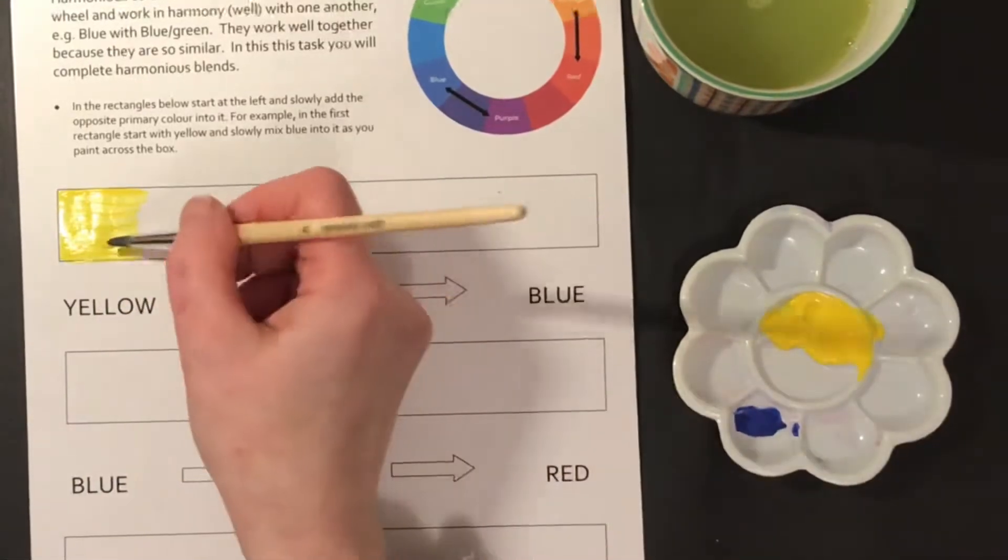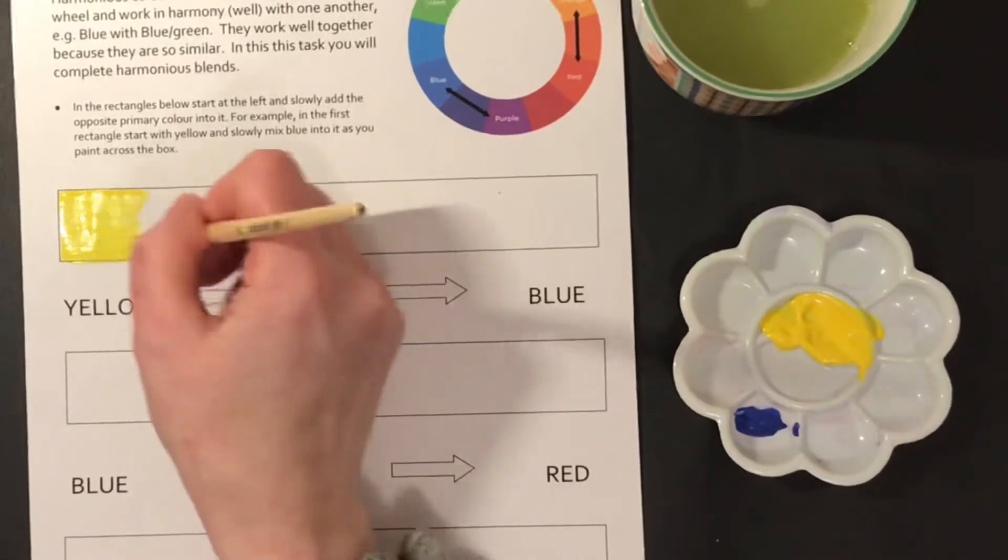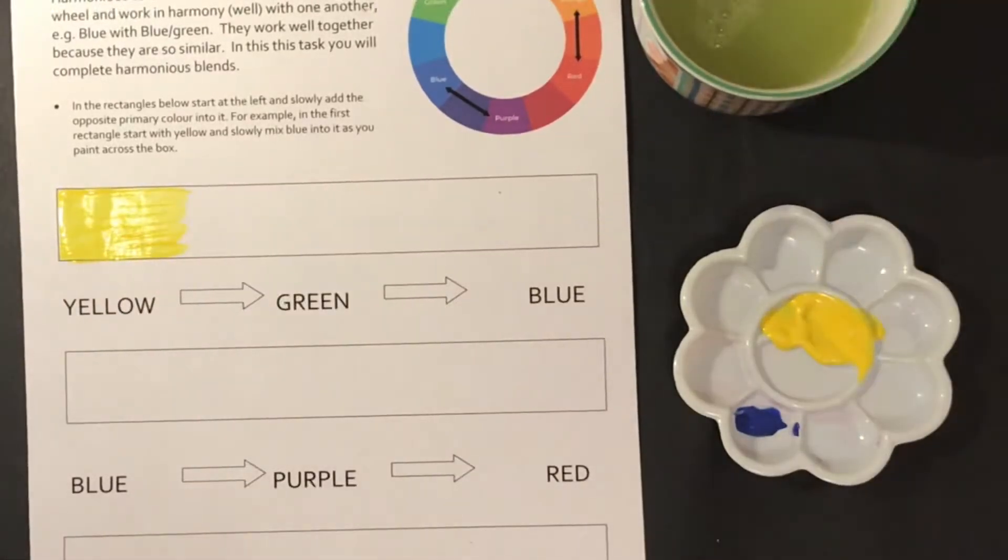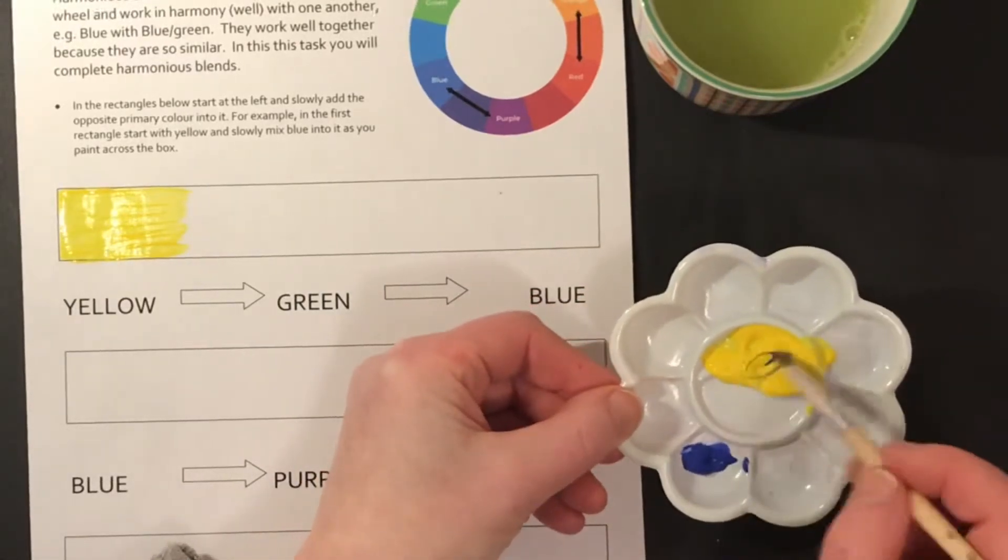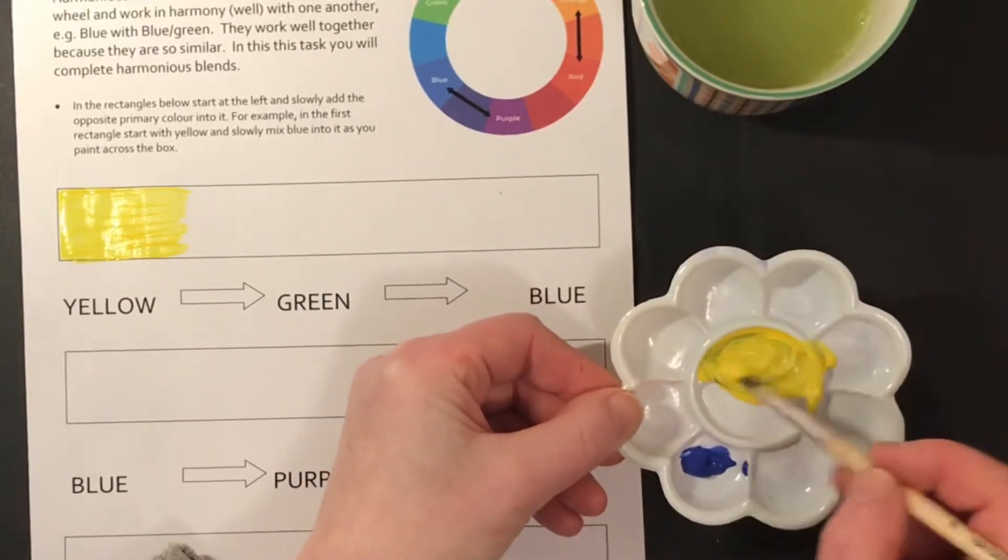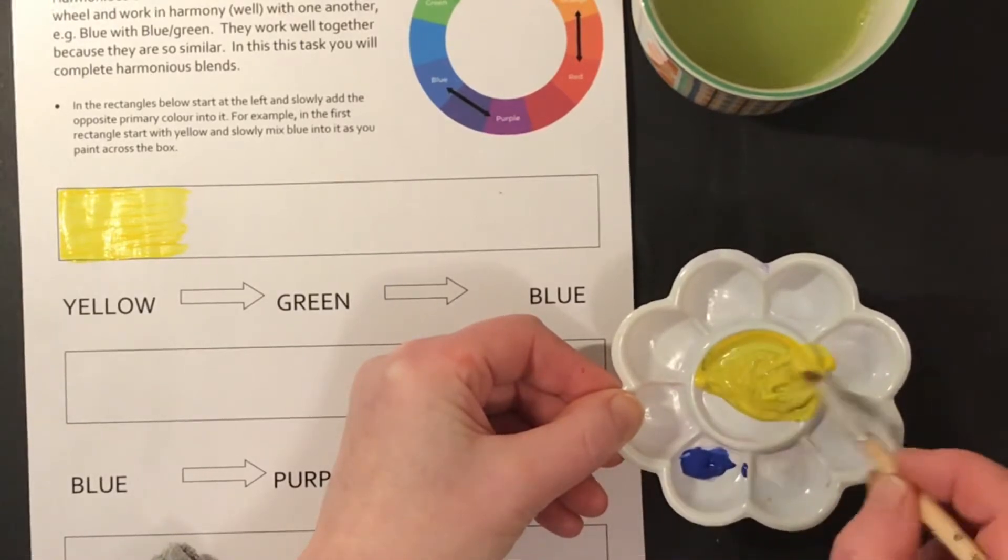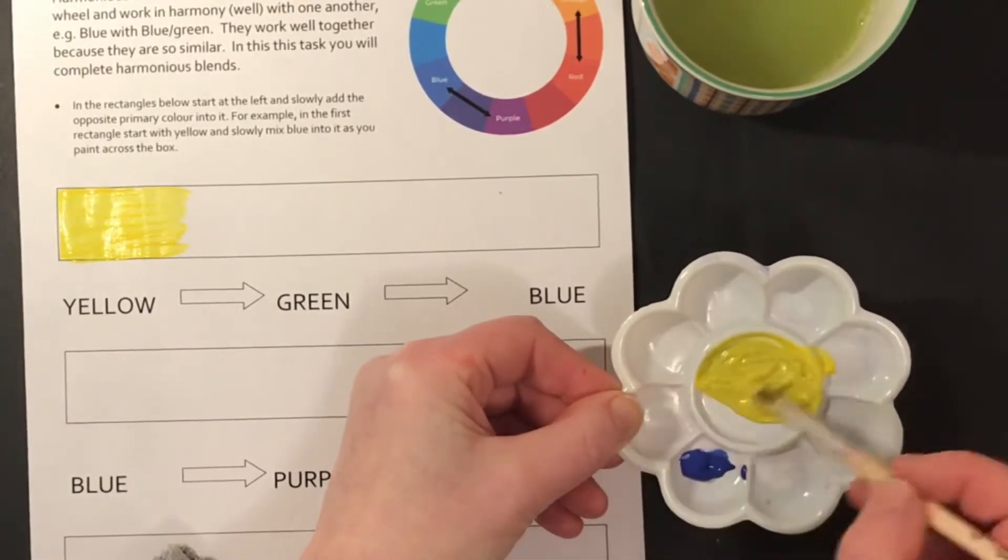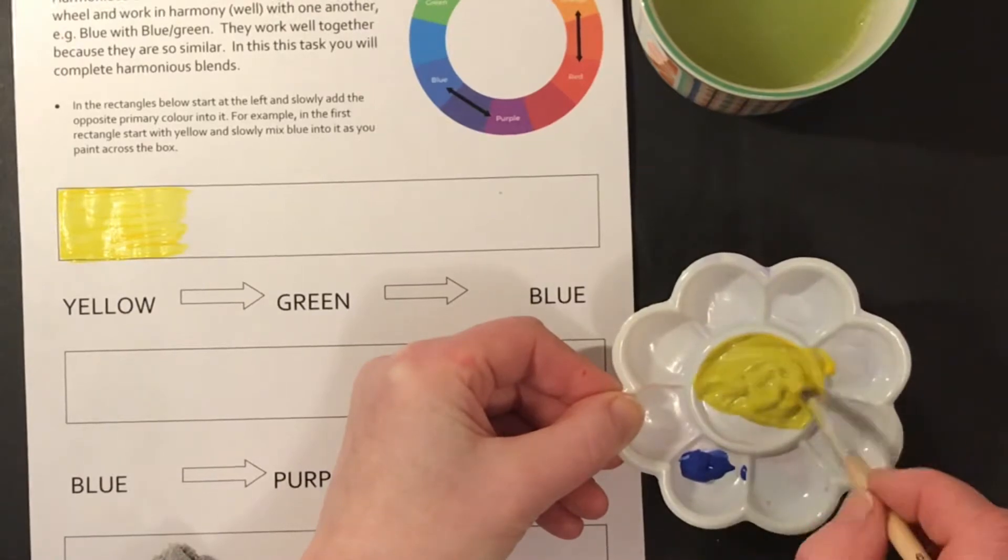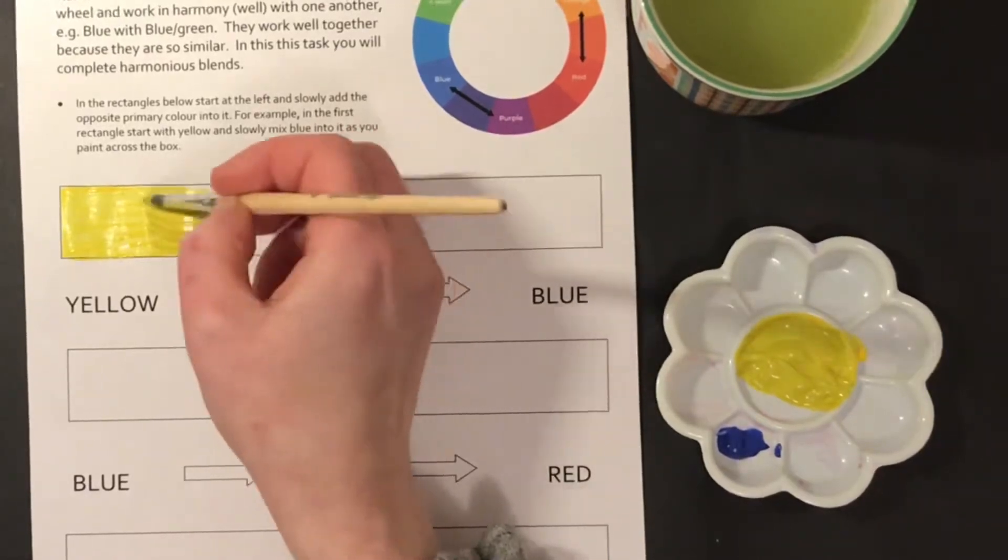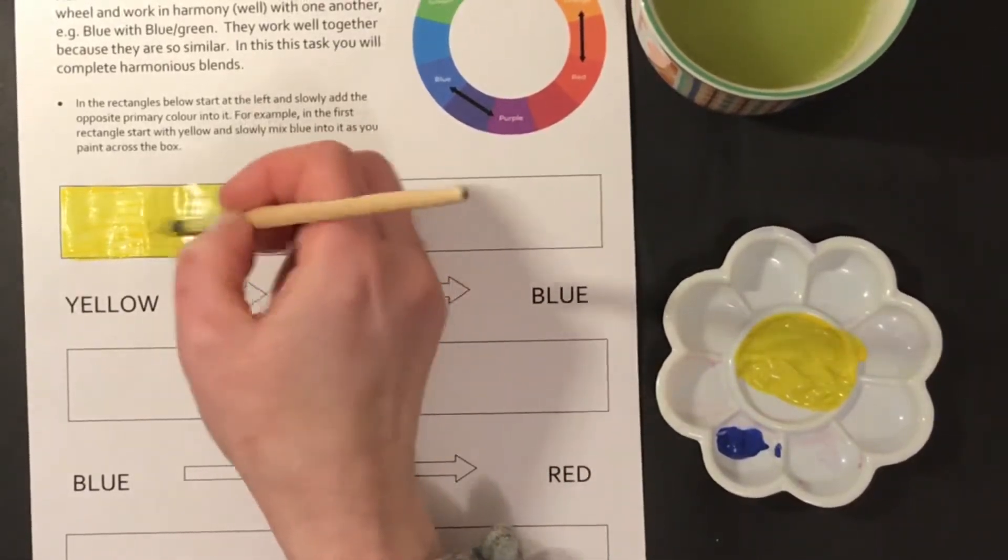Once you've laid down your yellow, then you want to start adding in your blue. You want to add the tiniest amount of blue because the blue will change the yellow very quickly. The first color you're going to start to see is a yellow-green. Continue to add blue and what you will find is that your color will start to become more green.